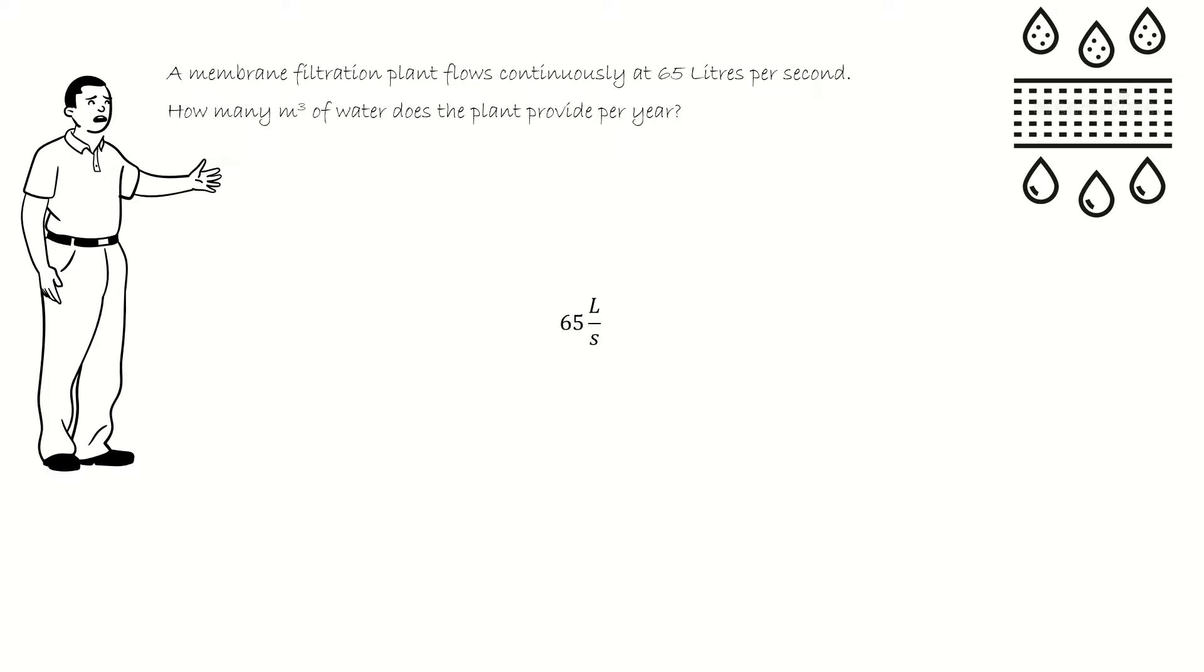65 liters per second multiplied by 1 cubic meter per 1,000 liters, multiplied by 60 seconds in a minute, multiplied by 60 minutes in an hour, multiplied by 24 hours per day, multiplied by 365 days per year.